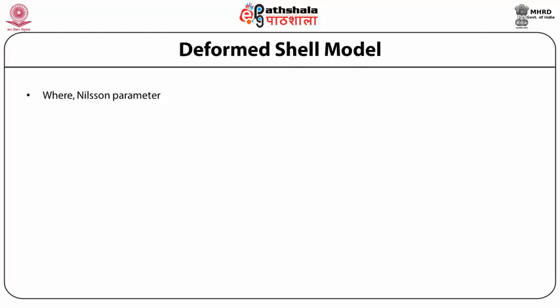We continue discussing the deformed shell model. The Nielsen parameter δ was introduced by Nielsen, who developed this model. The parameter δ is equivalent to (3/2)√(5/4π)·β₂, which is very close to 0.95β₂. This indicates that the Nielsen parameter δ is connected to the quadrupole deformation parameter β₂ by the relation δ ≈ 0.95β₂, so knowing δ allows us to find the quadrupole deformation parameter.